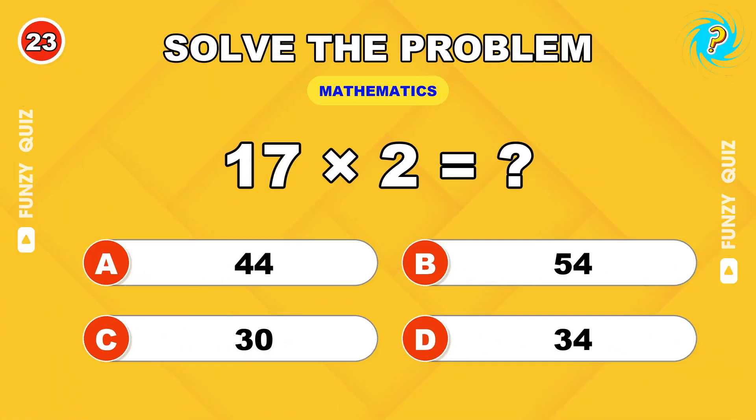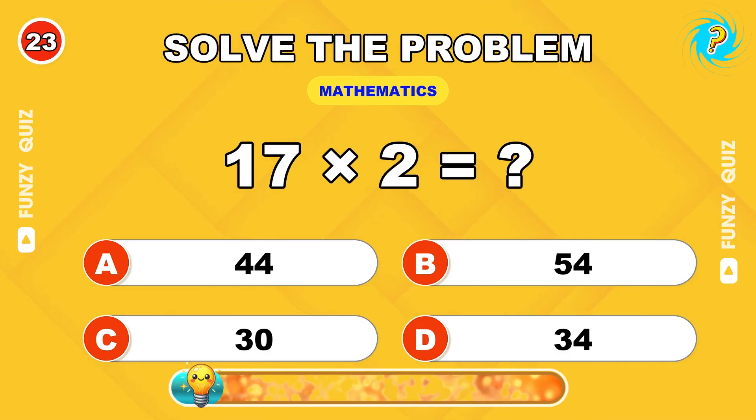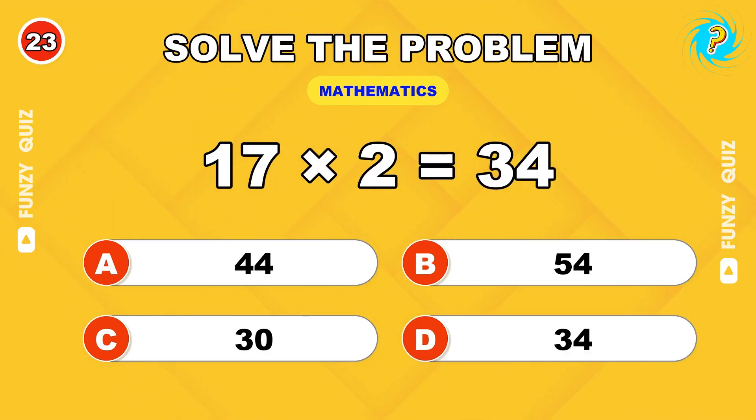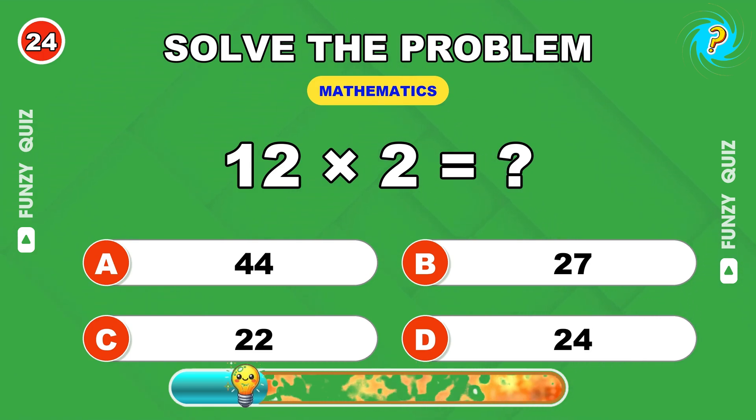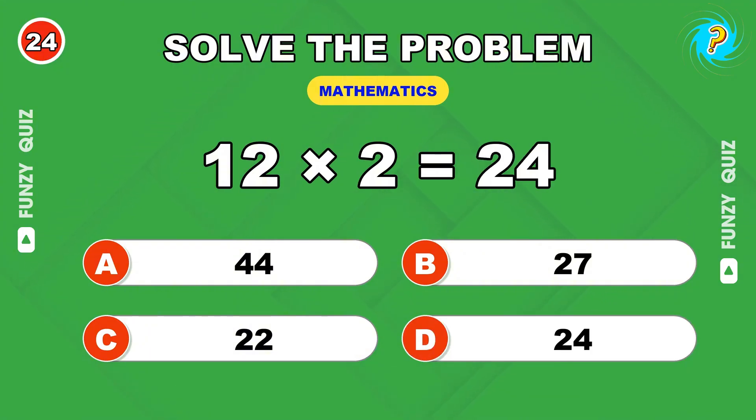What's 17 times 2? 34. 30 times 12? 360. Halfway there. 12 times 2? 24.